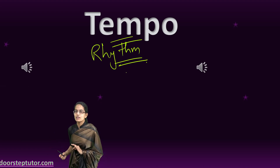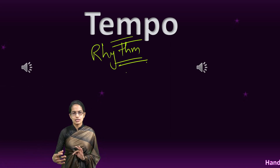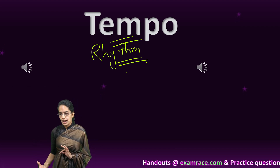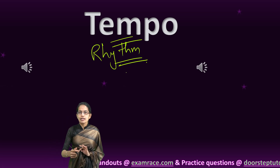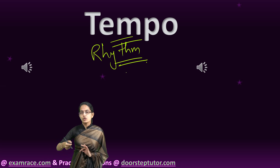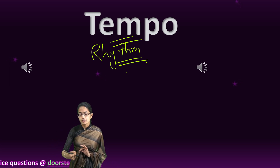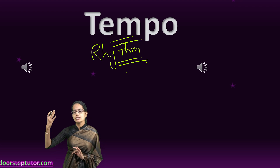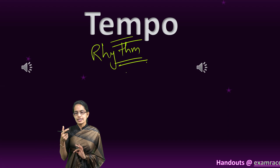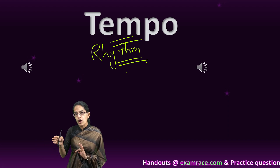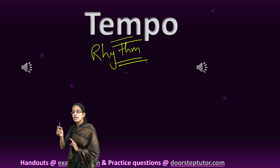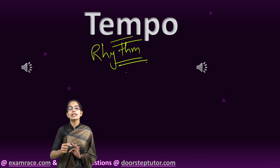Whenever music is being played, it is a combination of all of these — the pitch, the loudness, the tempo, and the timbre or tone. The harder the strings are plucked, the louder the sound produced. Also, if thicker strings are used, such as in a guitar, they create slow vibrations and as a result a deeper pitch, in contrast to thinner strings which create a high pitch sound.